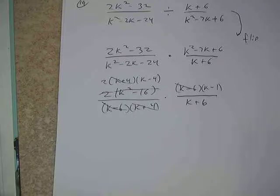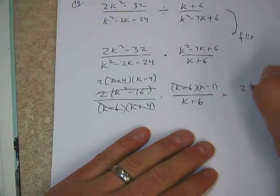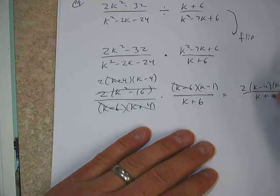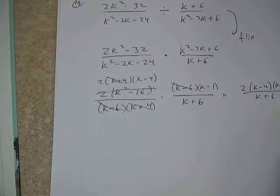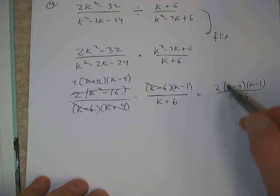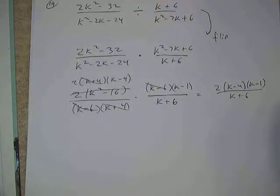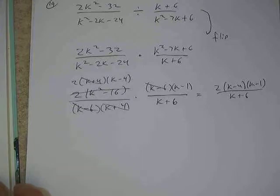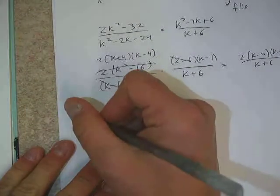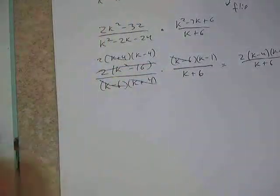So change it to that. And if we look, what do we have that's cross-out worthy? We can cross out a k minus 6 and a k minus 6 on the top and bottom. We have a k plus 4 here and a k plus 4 here. And that's it. We don't have anything else that's in common, any common factors. So ultimately we'd have 2 on top, k minus 4, k minus 1. And on the bottom we have nothing left but a k plus 6. And that would be our final answer. Now, one thing we might ask is, do we need to multiply this part out? And the answer is absolutely not. Anytime we do this multiplication or division of rational numbers, feel free to just leave it in the factored form. Do not multiply this stuff out. You can if you want to, but there's really no good reason to. So let's make it a rule for us that we do not multiply those out.